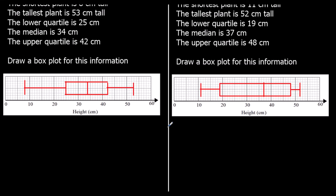We need to know what each of the lines on the box plot represents: the lowest value, the lower quartile, the median, the upper quartile, and the highest value. The difference between the lowest and highest value is called the range. The difference between the lower quartile and the upper quartile is called the interquartile range.